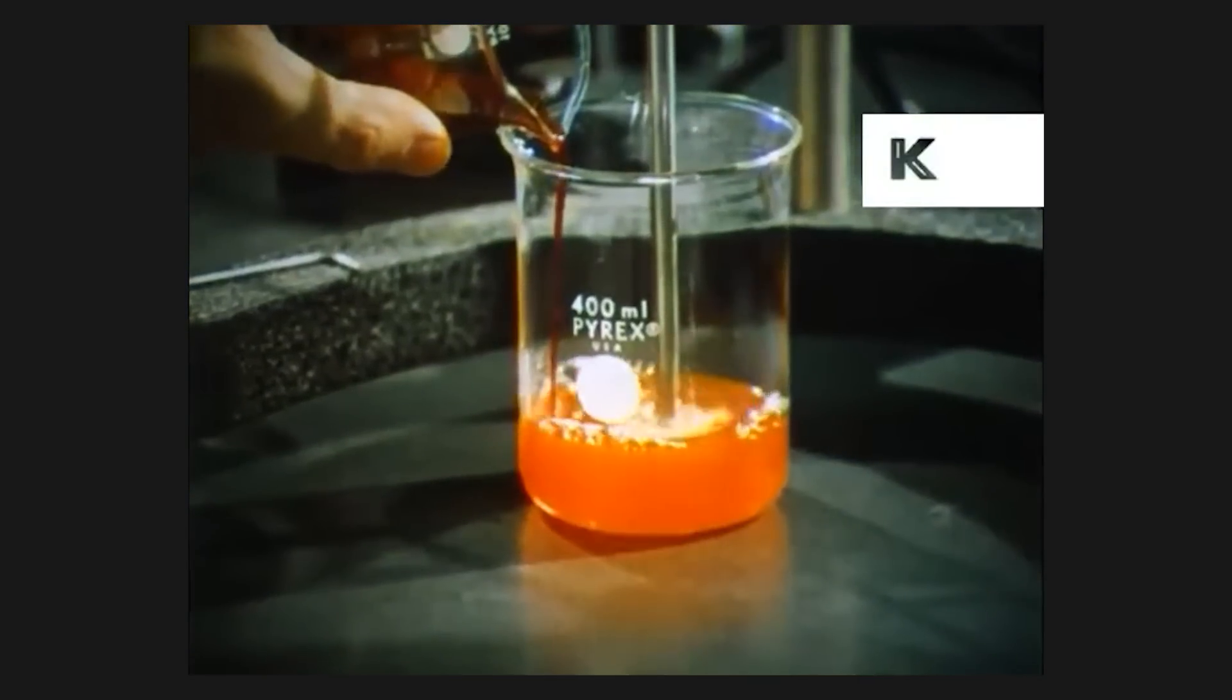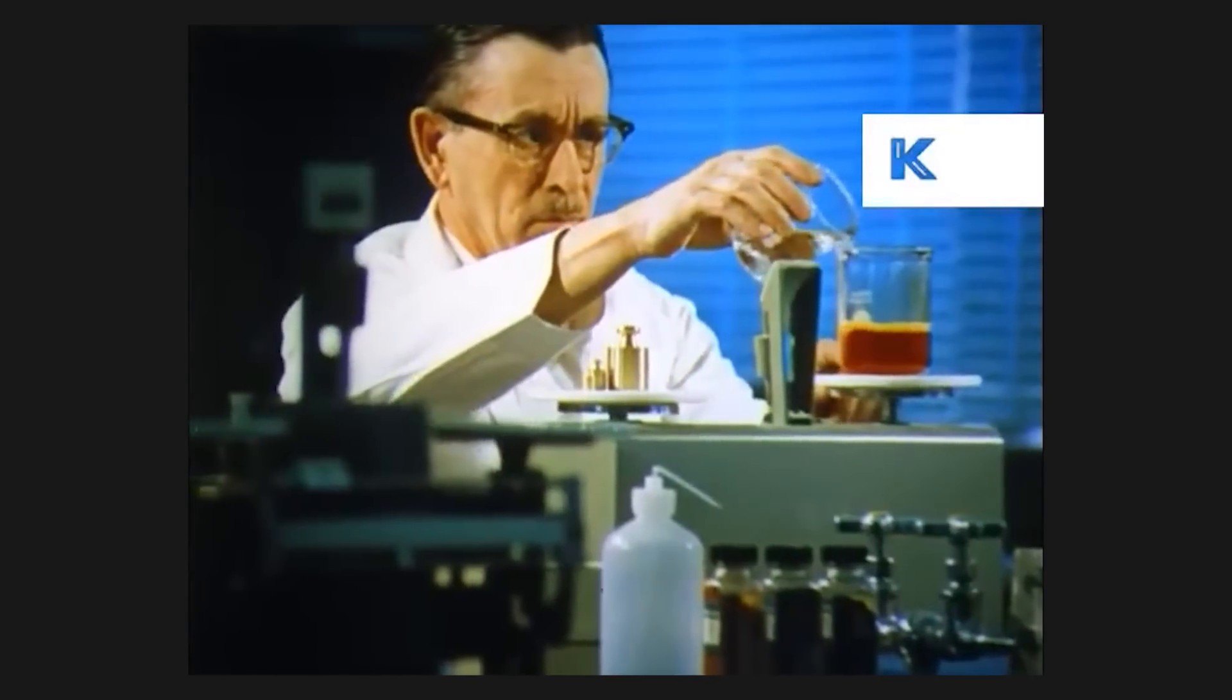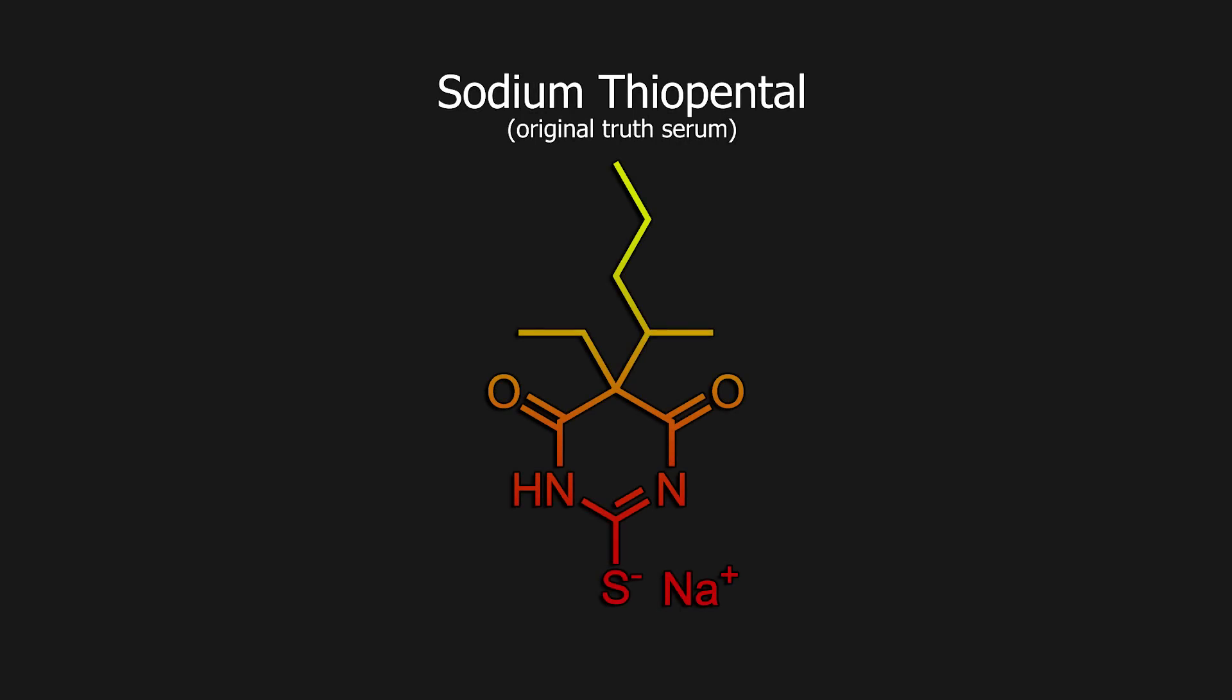Other pharmaceutical companies saw this success and quickly started designing new patentable derivatives. This boom in popularity led to the design of 1500 barbiturate derivatives, and in 1930, a very prominent one was found, sodium thiopenthal, which is almost analogous to what I will be synthesizing today.